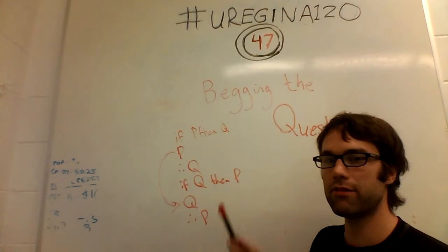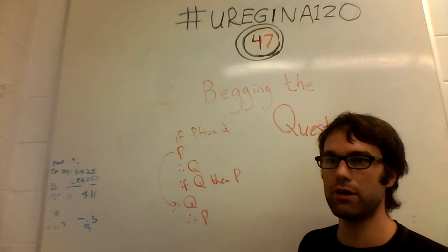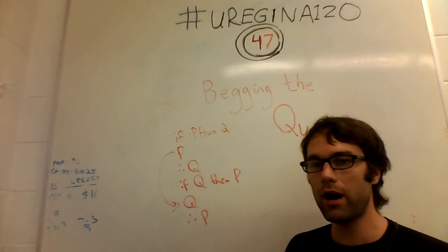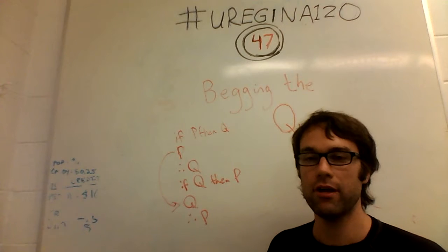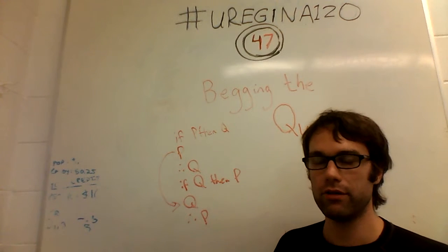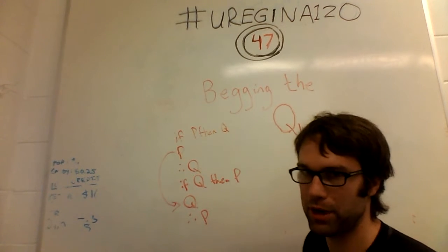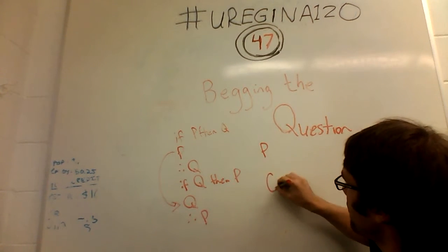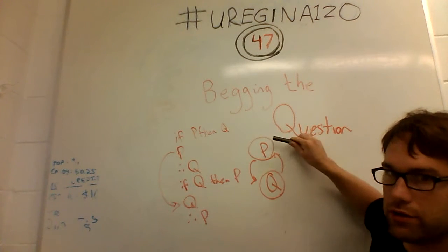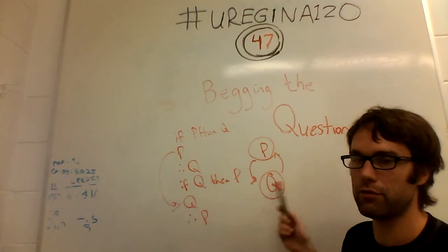The reason you would do this is if the person you're trying to convince doesn't actually believe P yet. So you give them the second argument: if Q then P, Q therefore P. The problem is that this Q is the same in both cases. So you're basically assuming what you need to be true in order to prove what you want to assume. You're going in a circle — you need P to prove Q, and you need Q to prove P. This is a quandary, because you have no proof of either unless you've already proved both.